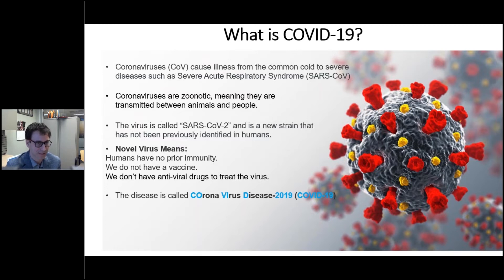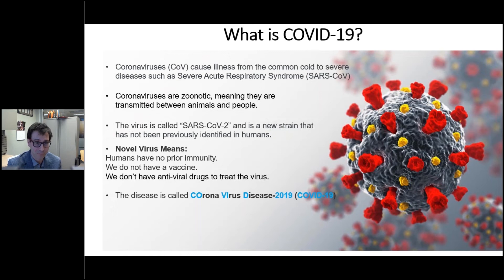Coronaviruses, abbreviated COV, represent a family of viruses that cause a series of different infections, from just the common cold to much more severe diseases like severe acute respiratory syndrome, which we know as SARS. Coronaviruses are zoonotic, meaning that they're transmitted between animals and people, and because of that, you can create novel ones — ones never seen before in humans.